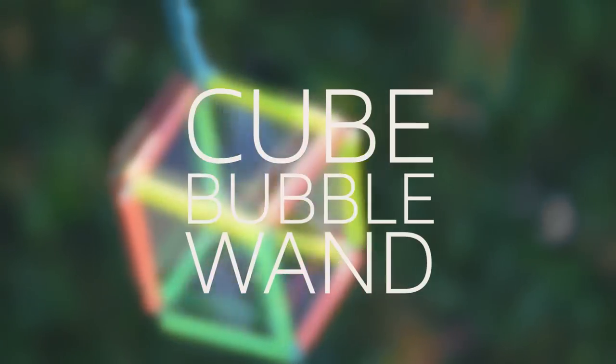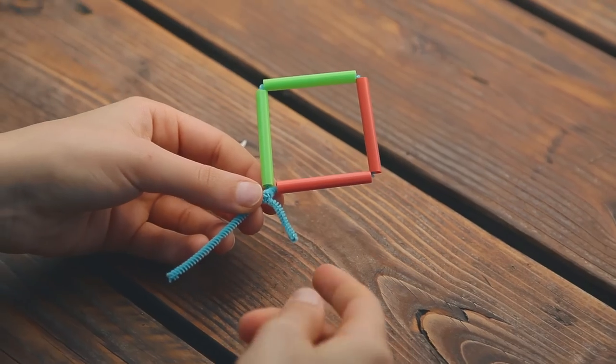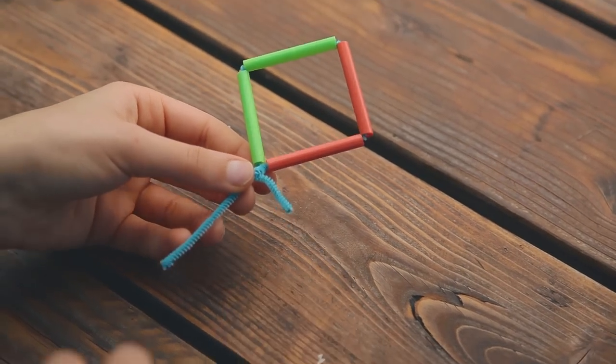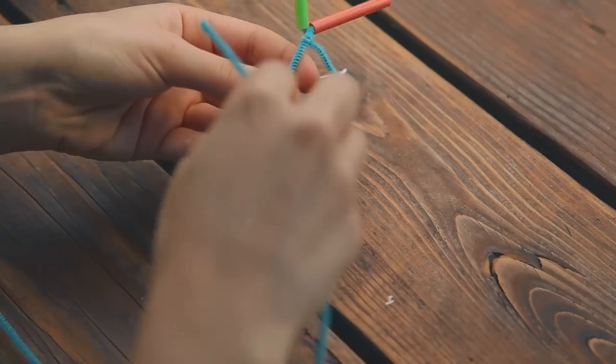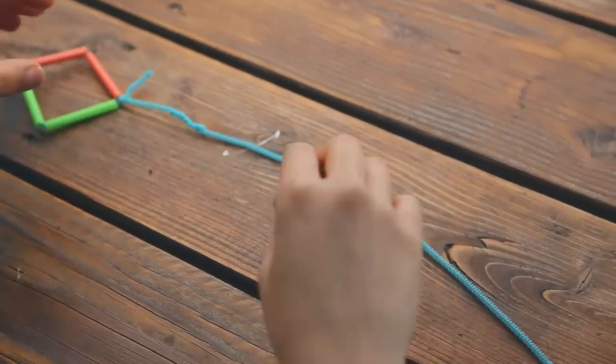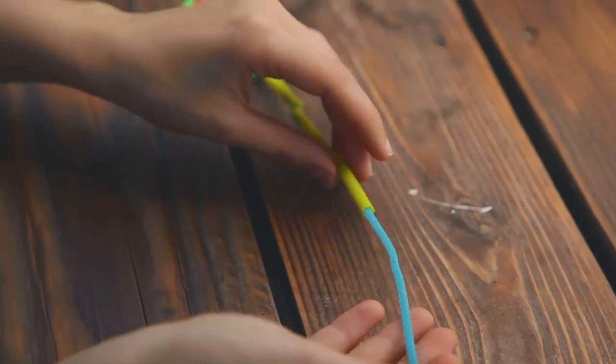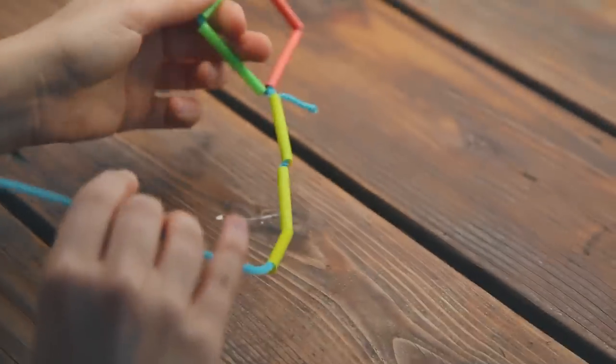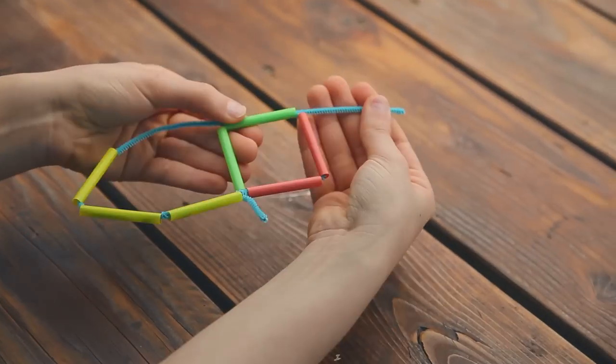Now let's make a cube bubble wand. Take your square bubble wand. Just make sure to leave the short end of the pipe cleaner sticking out. Twist the second pipe cleaner onto the long end of the first one. Slide three straw pieces onto the pipe cleaner. Push the end of the pipe cleaner through the first square to make a second one.